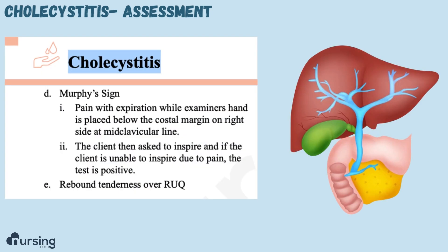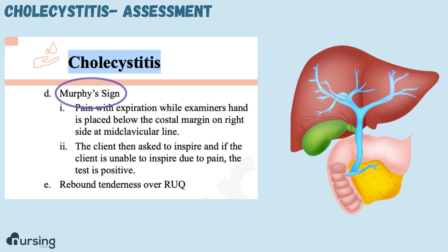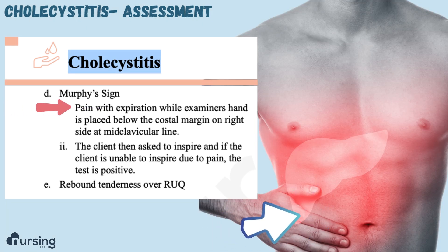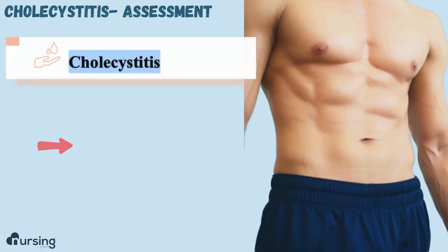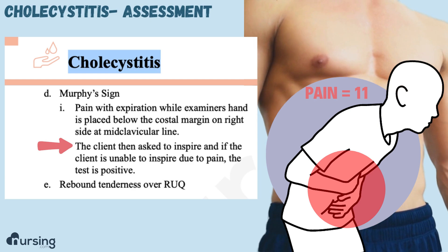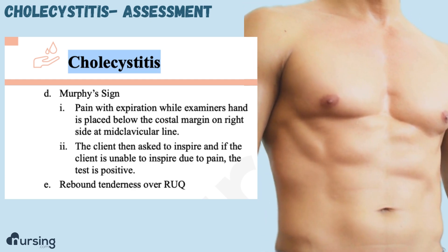You might also see something called Murphy's sign. This is pretty specific to gallbladder and liver disease, so it helps us know what we're dealing with. You press your fingers or hand up under the ribs on the right upper quadrant and ask the patient to take a deep breath. If the pain is so bad that they can't breathe in fully, that's a positive Murphy's sign.